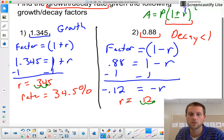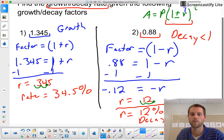If I slide that decimal place over two positions, my rate as a percentage is going to be 12%. And since this is decay, let's just note that: 12% decay. And there you go.